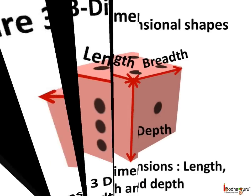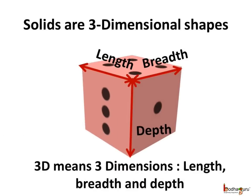All the solid shapes which we can hold have one more dimension which is the depth. Like this dice — it has the length, breadth, and the depth. All the solid objects are 3D shapes. 3D means three dimensions: length, breadth, and the depth.